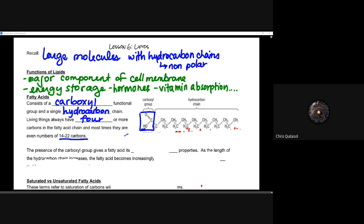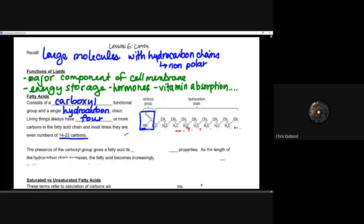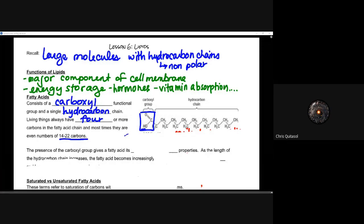The key thing that differentiates fatty acids from carbohydrates is that they're usually chain structures. Living things always have four or more carbons in their fatty acid chain, and most times there are anywhere from 14 to 22 carbons in that chain. That long chain of carbons gives it special structural properties. The functional group can lose its hydrogen ion and become polarly charged, turning into what's called an acid.